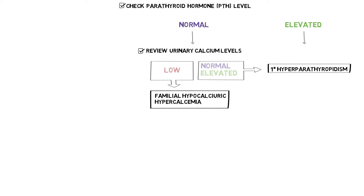A low urinary calcium means that the patient has familial hypocalciuric hypercalcemia — meaning a low amount of calcium in the urine and a high amount of calcium in the blood.